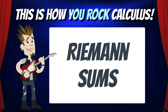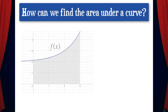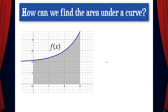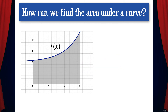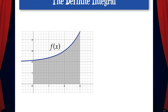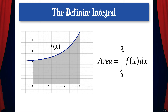In this video we're going to learn about a topic called Riemann sums. One of the big questions in calculus is how can we find the area under a curve? It turns out the exact area under a curve is given by something called the definite integral. Here I've shown the definite integral from 0 to 3 of f of x dx, which represents the area under the f of x curve. We'll talk about how to calculate definite integrals in a future video, but in this video we'll be leading up to that idea with Riemann sums.